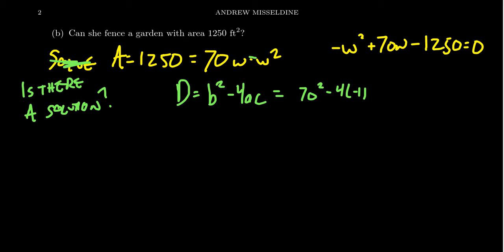Using the values from the quadratic equation, we get that b is 70. So you're going to get 70 squared minus 4 times a, which is negative 1, times c, which is negative 1250. Computing this, 70 squared is going to give us positive 4900. You get a triple negative here. So 4 times 1250 is going to be 5000. We see the discriminant turns out to be negative 100.